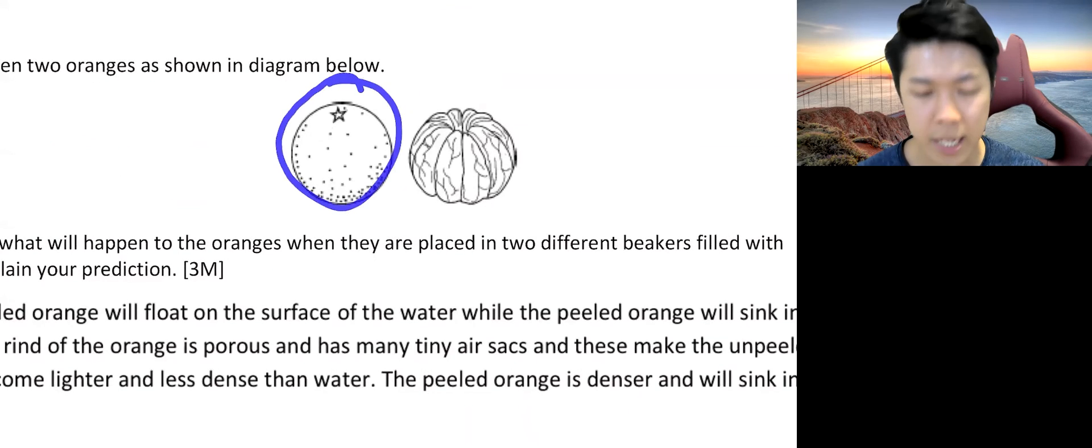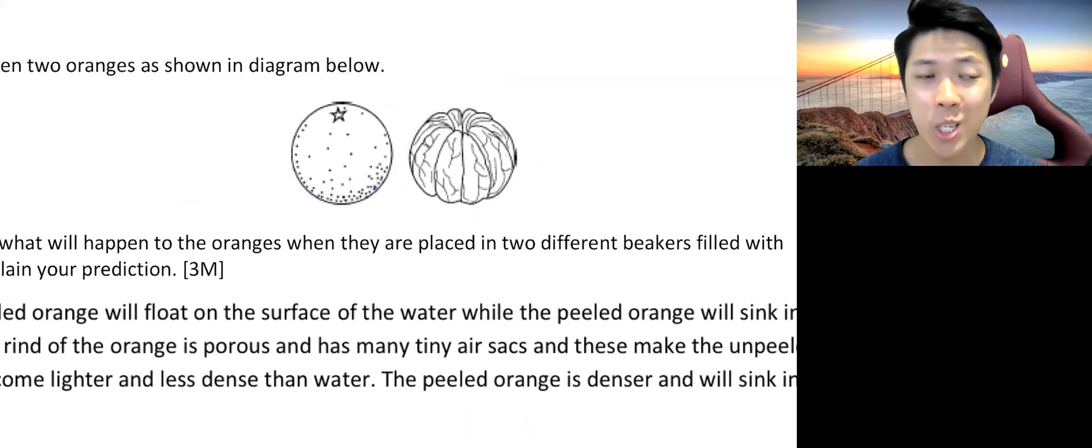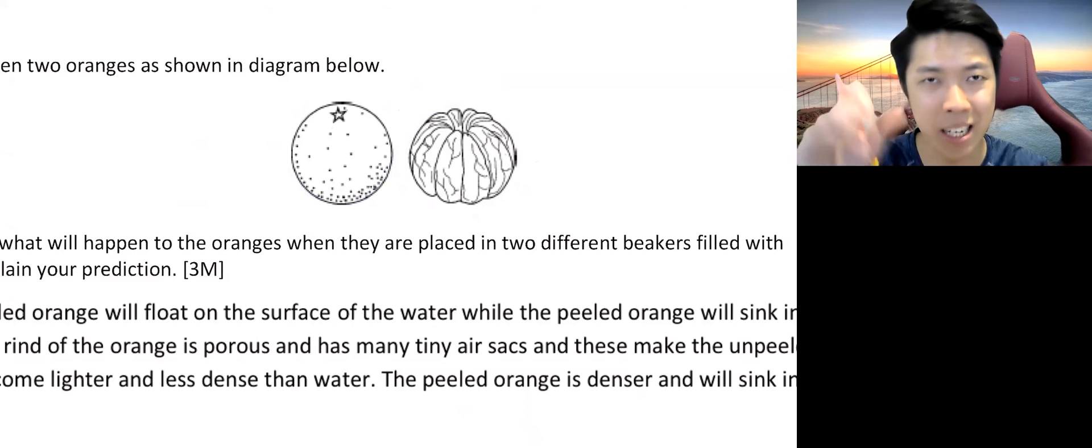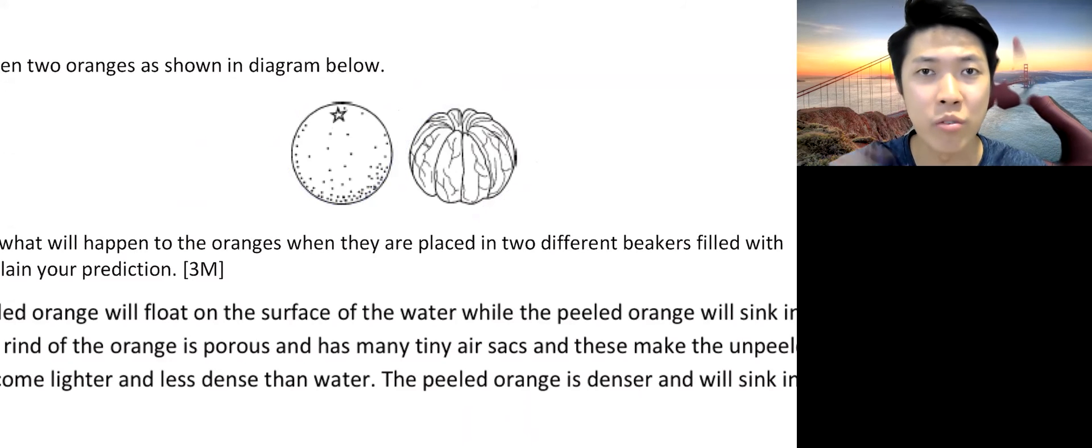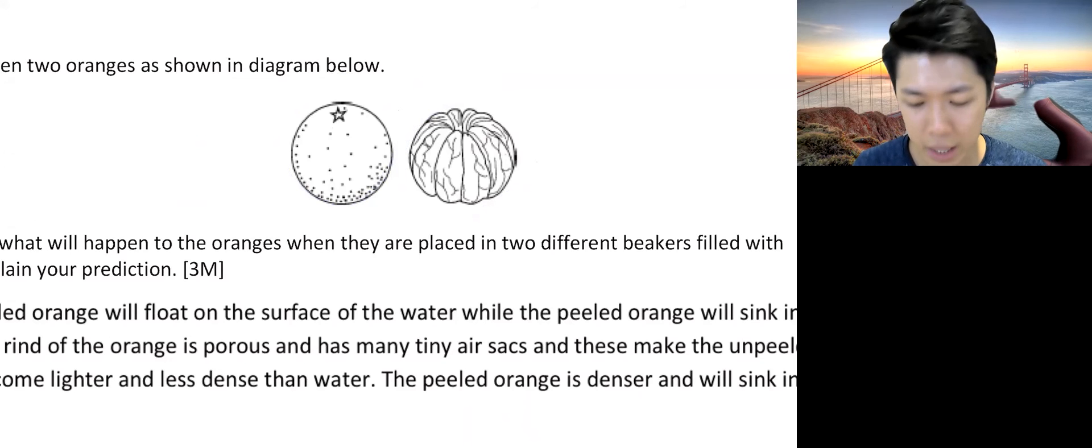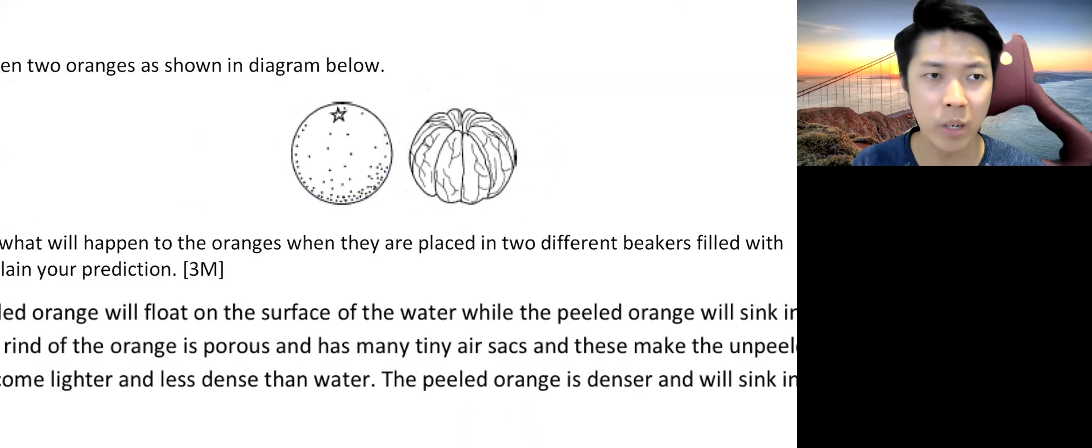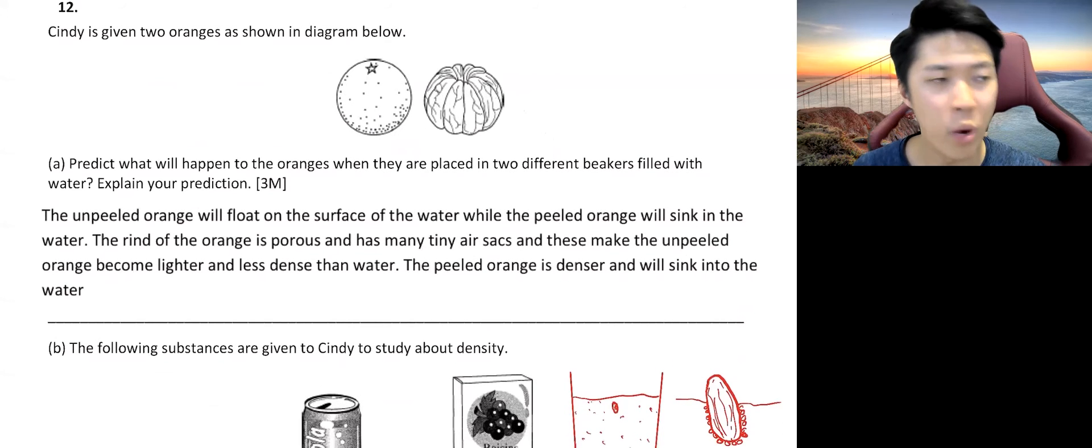We have two oranges. The question is asking what will happen to the oranges when they are placed in two different beakers that are filled with water and explain your prediction. Now, the difference here is with skin, without skin. So your peeled orange, you all know the difference. Skin has the white color area that has the rind of the orange. There's a lot of air sacs, a lot of air pockets. It's spongy when you press. So those are the part where it contains air. And the one without the skin, it's just full of juices.